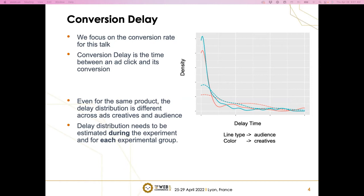In this talk, we'll focus on the conversion rates. It's a metric that is very important to e-commerce company like JD, but similar idea can be applied to other similar delayed binary feedbacks. Here we define the conversion delay to be the time between an ad click and its conversion. In the graph on the right hand side, you can see this is density of conversion delay for the same SKU, but with different ad creative and audience. What we want to show is even for the same products, the delay distribution is quite different across ad creative and audience. What that means is the delay distribution needs to be estimated during the experiments and for each experimental group.